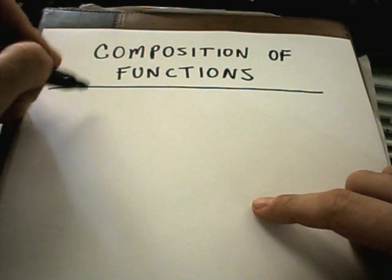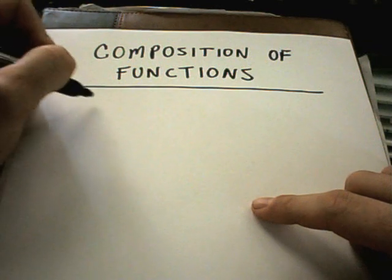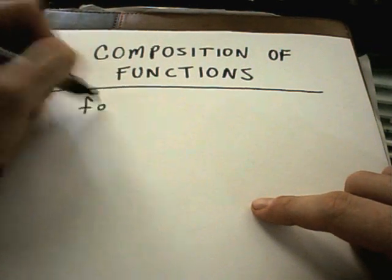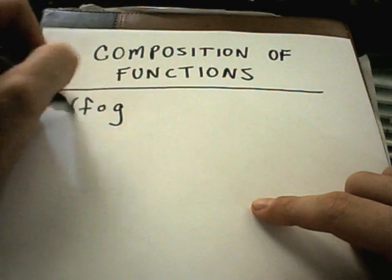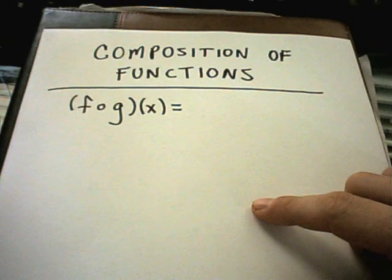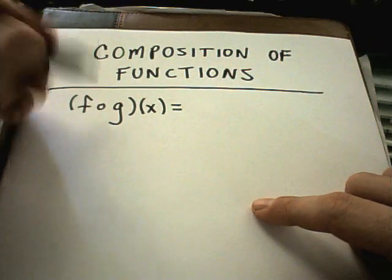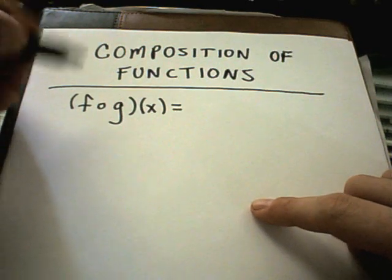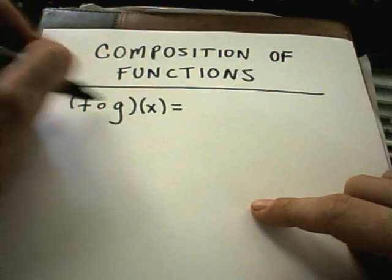In this video we're going to talk about composition of functions and the notation. They'll write f circle g of x. This is not a multiplication symbol, that's why they make it a little dot. Likewise, it's not the word 'fog'—I've heard people ask me about fog x.